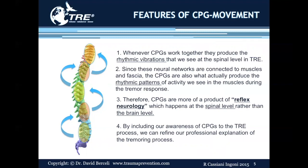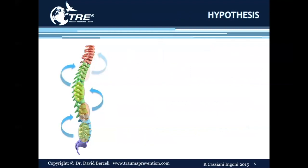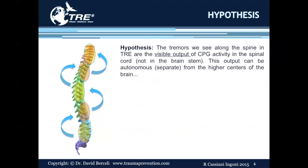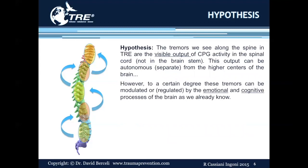By including our awareness of central pattern generators in the TRE process, we can refine our professional exploration of the tremoring process. The working hypothesis is that the tremors we see along the spine in TRE are the visible output of central pattern generator activity in the spinal cord, not in the brainstem. This output can be autonomous or separate from the higher centers of the brain. However, to a certain degree, these tremors can be modulated or regulated by the emotional and cognitive processes of the brain, as we already know.